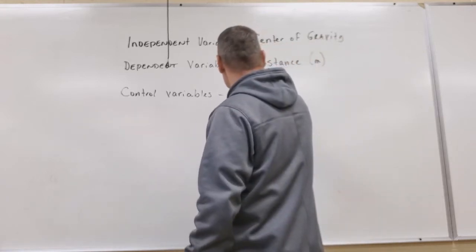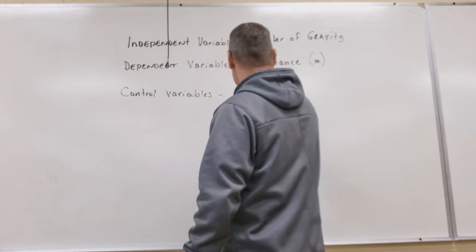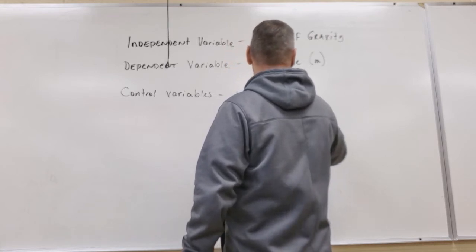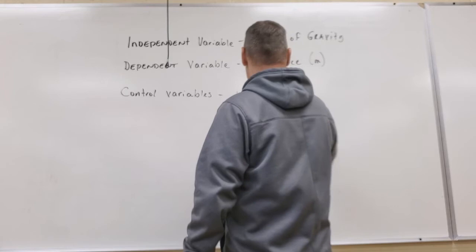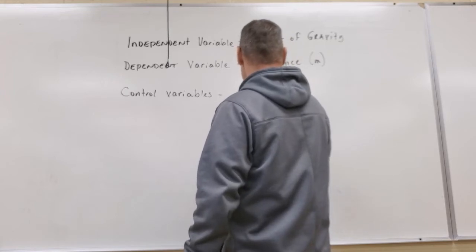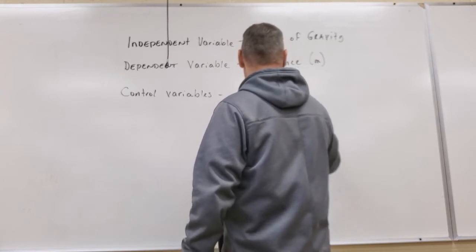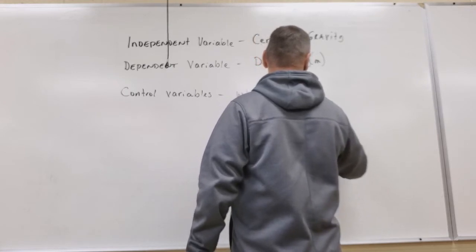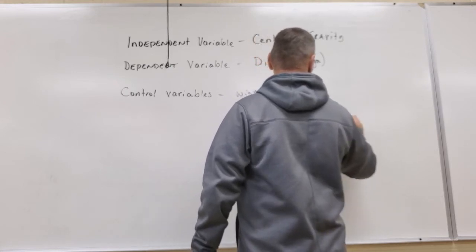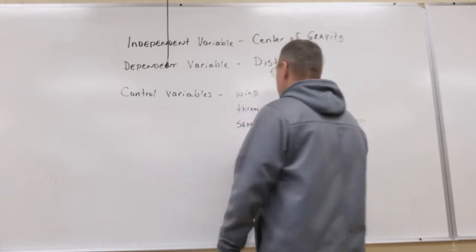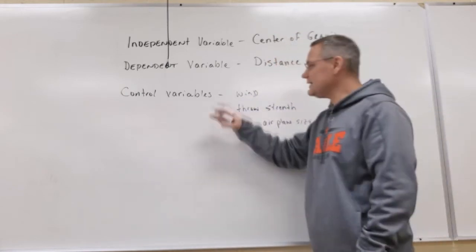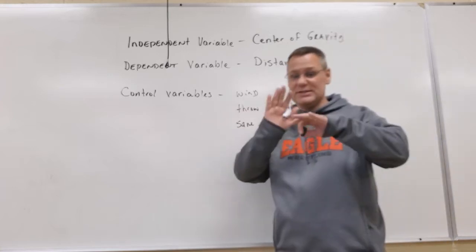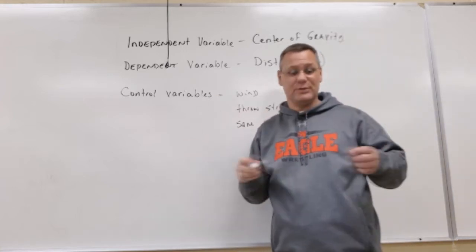Control variables include wind, throw strength, and making sure you have the same airplane design — same size and shape. Anything except the center of gravity should remain the same throughout the experiment.